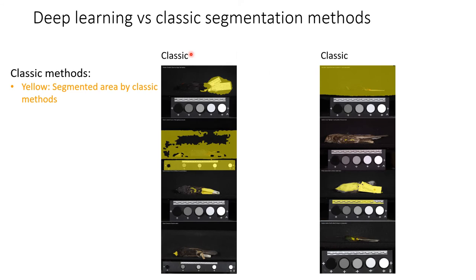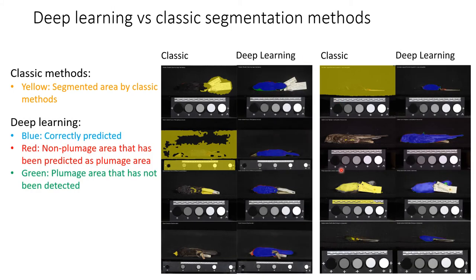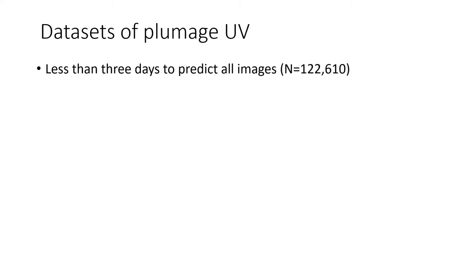Here are some examples of classic segmentation methods — the yellow areas failed to do the job while deep learning did fairly well. Deep learning managed to detect plumage areas that have similar color to the background, and can also differentiate bird specimens from museum labels. The deep learning results looked very promising, and it took less than three days to segment all images.